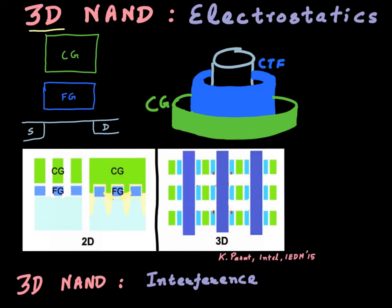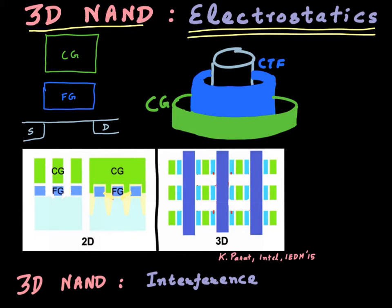One of the main reasons the industry moved towards 3D NAND was because of the better electrostatics, or the promise of better electrostatics in 3D NAND. In 2D NAND, electrostatics become worse as you scale the device and scale the dimensions — as you bring these word lines closer to each other or bring these bit lines closer to each other.